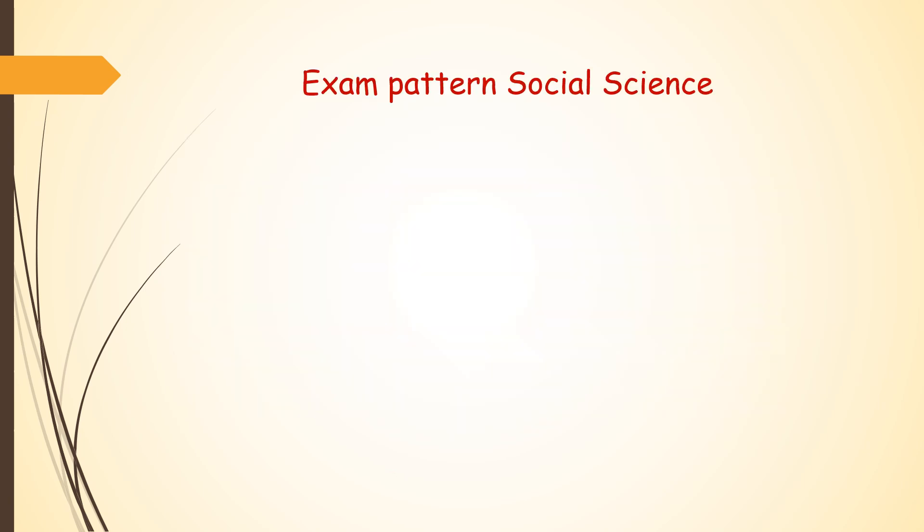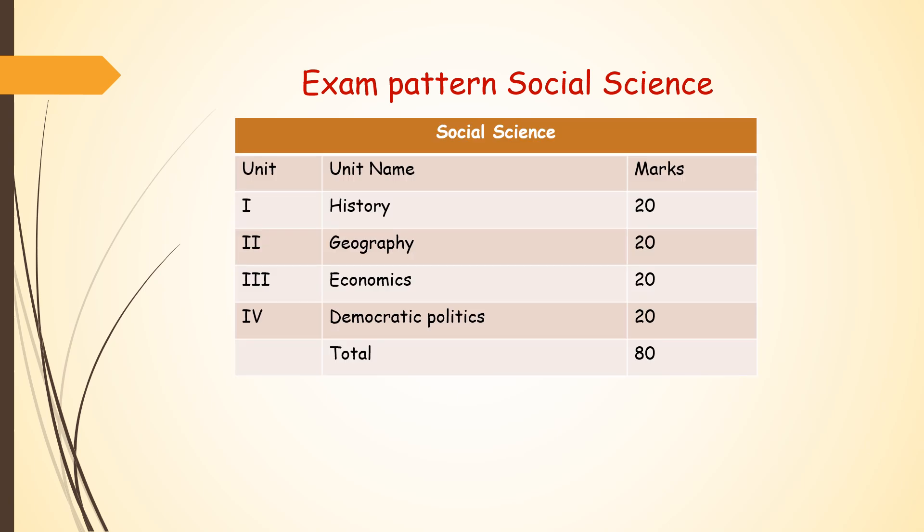Here is the exam pattern for social science. You can see it is divided into four units: history, geography, economics, democratic politics. Each unit is awarded 20 marks, so total paper will be for 80 marks.